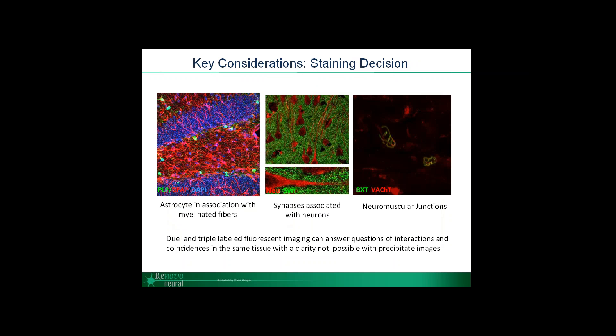I've shown you a histological stain and an example of a single antibody stain. But some questions are more about interactions between cells, neurons, the environment, or even at the intracellular level. For those, double or triple fluorescent immunolabeling can really highlight some of those interactions.